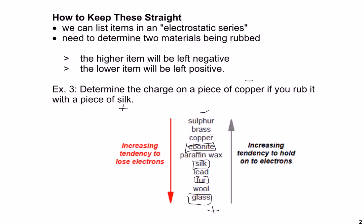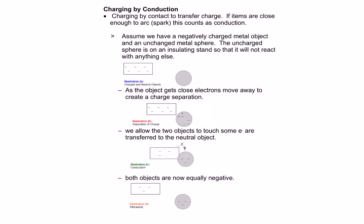Now, charging by conduction — a way to remember it is to think of conduction as contact. We're talking about touching objects together to transfer charge from one to the other. If you rub your feet on the carpet and get close to a doorknob, you'll see a little arc or spark. We count that as conduction even though you technically didn't touch it — if the arc can jump a small distance, it's still considered a transfer of electrons.